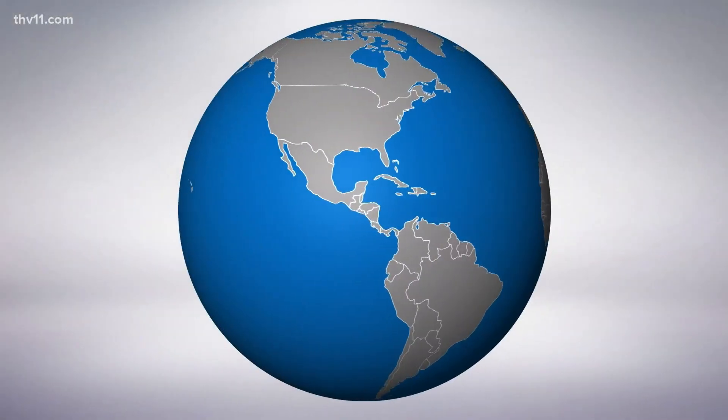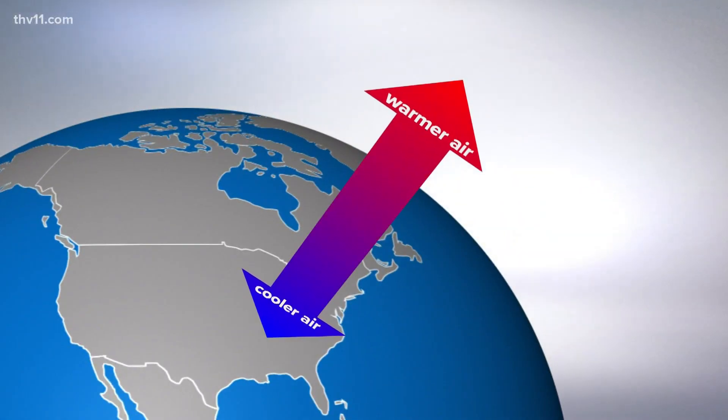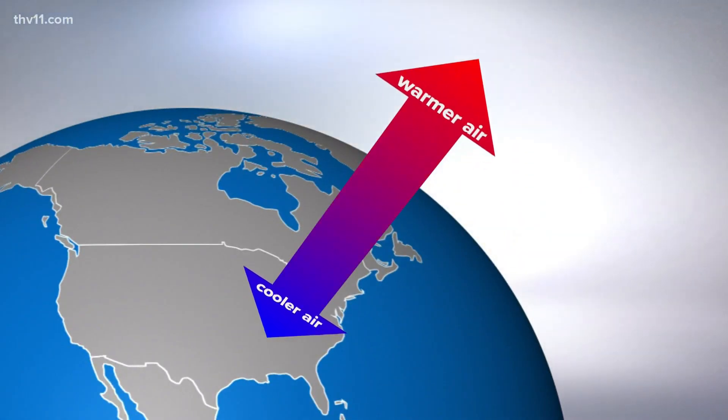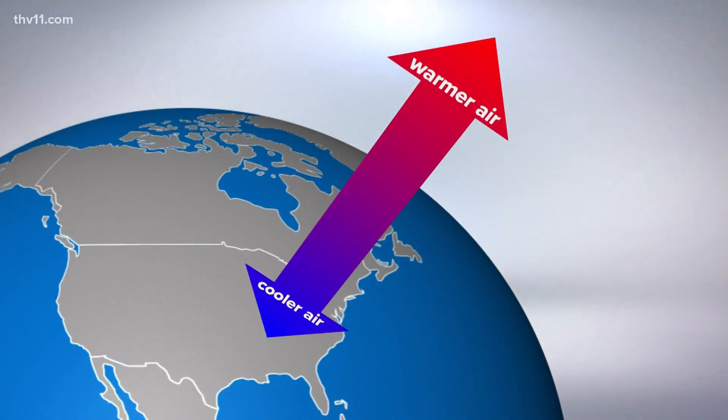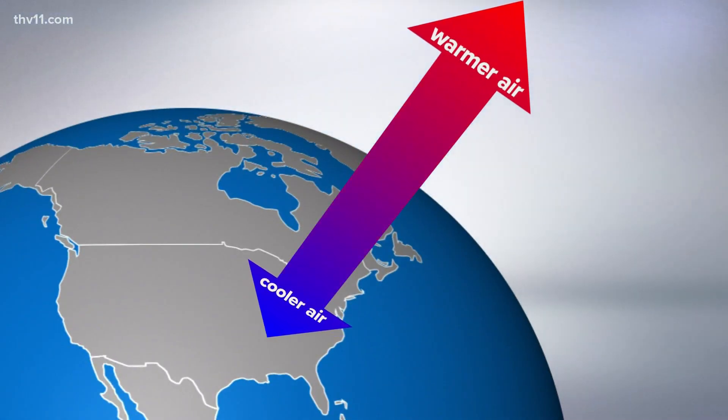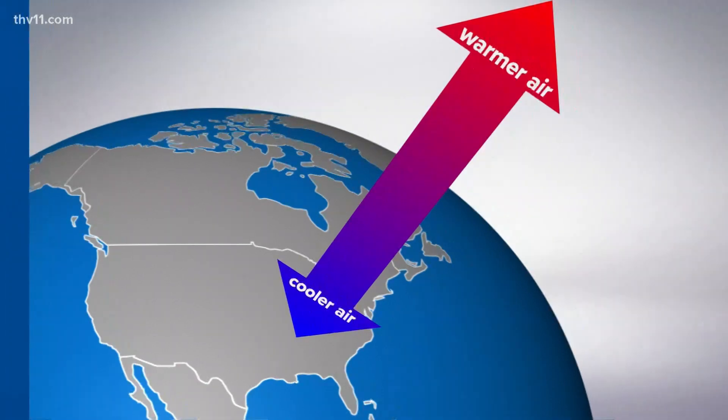When we get higher in the atmosphere, temperatures normally decrease, with the ground acting as a heat source. When it comes to temperature inversion, the opposite is true — we find cooler air closer to the surface and warmer air aloft. Think of inversion as a lid or cap that prevents air near the ground from rising higher into the atmosphere.